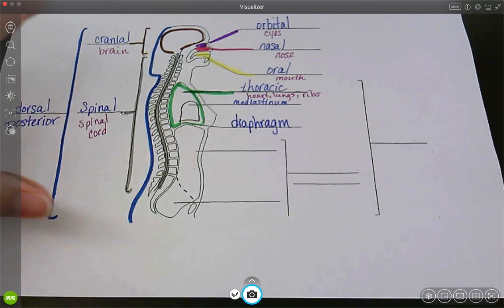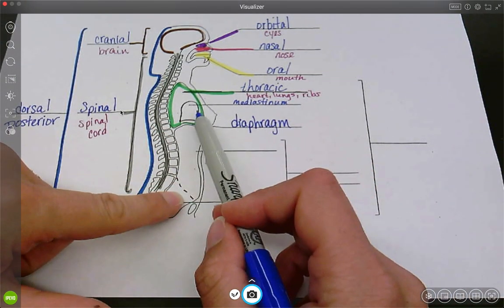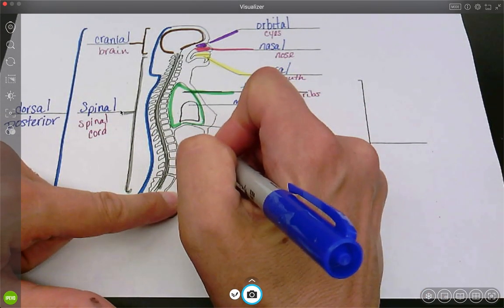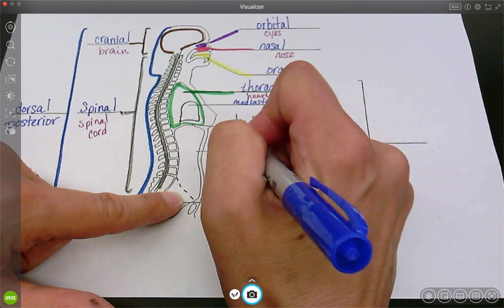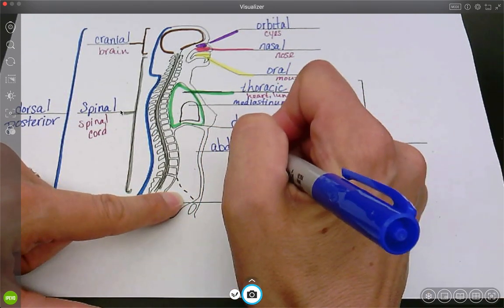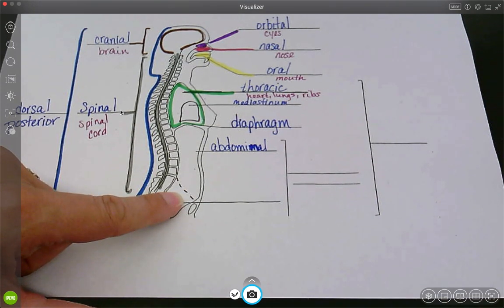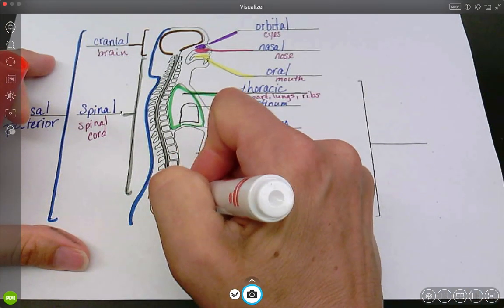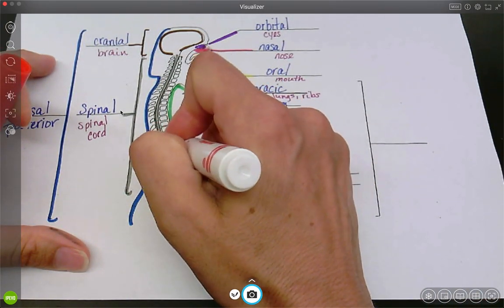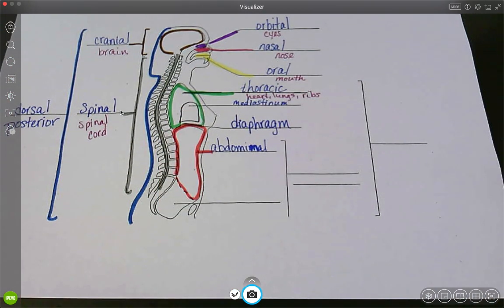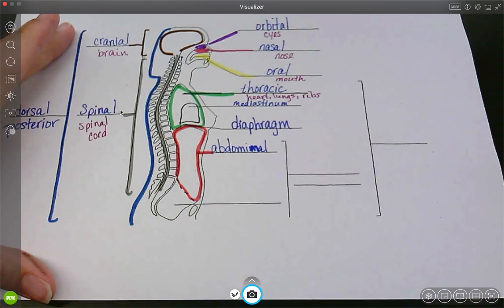All right. Let's look at the next cavity. So underneath the diaphragm, the diaphragm separates the thoracic from the abdominal. And I know you've heard that one before. Abdominal. Okay. So we'll get a color here. And so this is the abdominal region. So what do we see in the abdominal region?